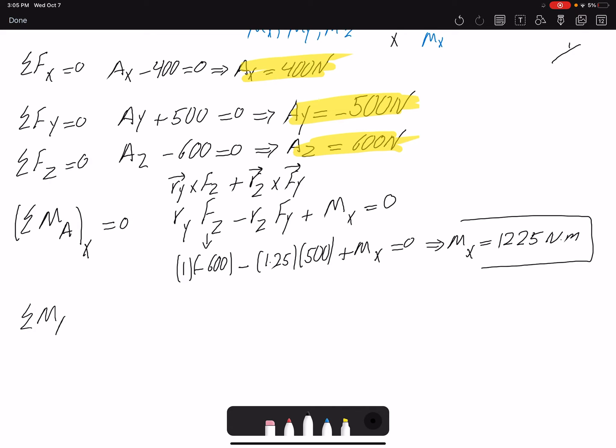I can do the same thing for Y as well. That would be negative Rx·Fz plus Rz·Fx plus MA,Y equals zero.